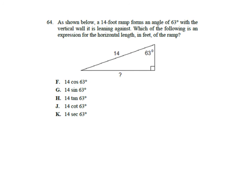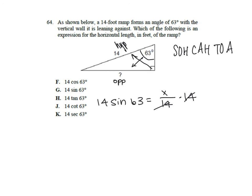The very last trig example says, as shown below, a 14-foot ramp forms an angle of 63 degrees with a vertical wall it is leaning against, which of the following is an expression for the horizontal length in feet of the ramp. So I'm going to mark my angle, label my sides. This side is opposite, this side is hypotenuse. I know that opposite and hypotenuse go with sine. So it would be sine 63 equals opposite over hypotenuse. I have to solve for X, so I would multiply by 14 on both sides. So I'm looking for this answer, which would be G. Thank you.